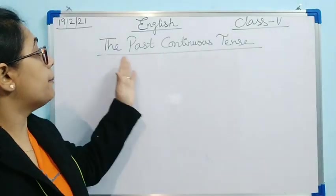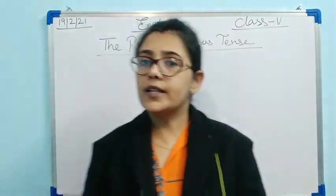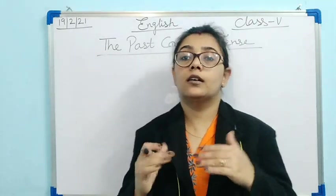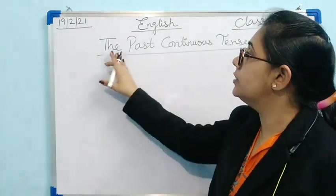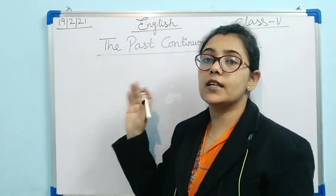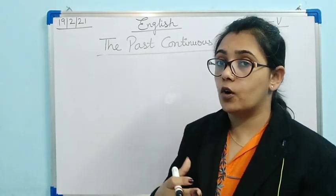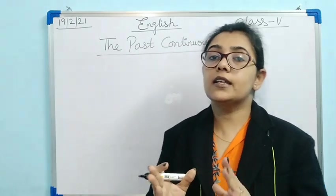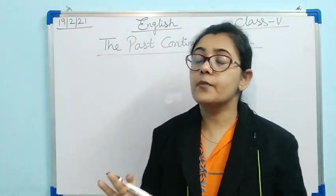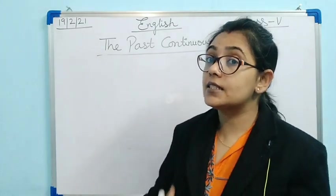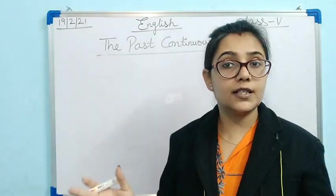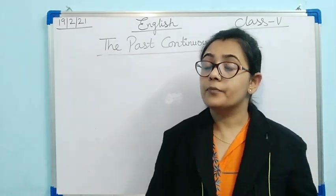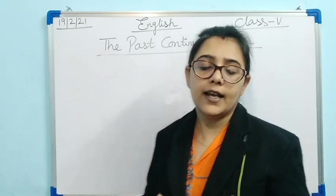Before starting past continuous tense, let us recall what present continuous tense is. While teaching present continuous tense I gave you a formula which we are going to discuss here. Continuous means anything which is going on — I explained the same thing for present continuous tense. The action which is going on comes under continuous form. Present continuous tense means the action is still going on. Past continuous tense means that in the past also the action was still going on.